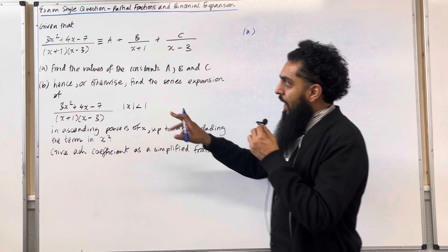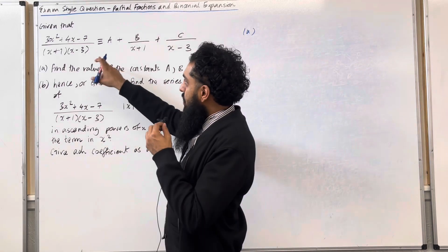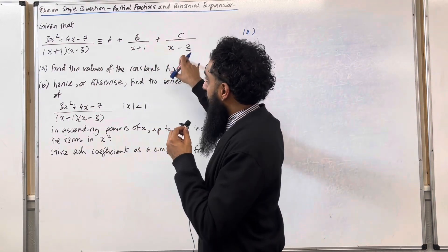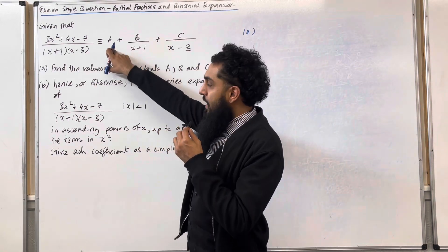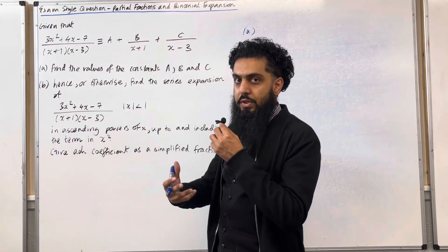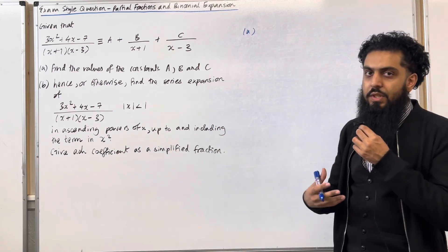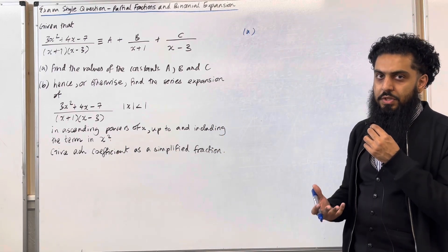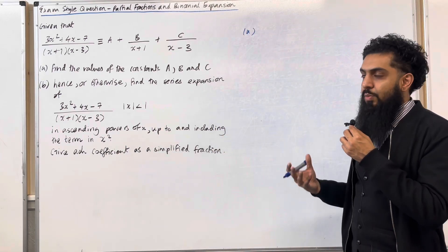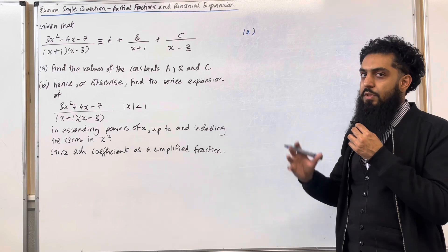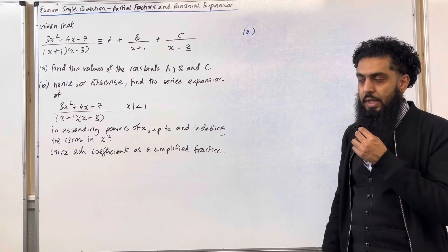Notice that this fraction is identical to A plus B over (x plus 1) plus C over (x minus 3). This A is called the quotient. To find the quotient, we have to use polynomial division. This is why we do polynomial division before we split into partial fractions.